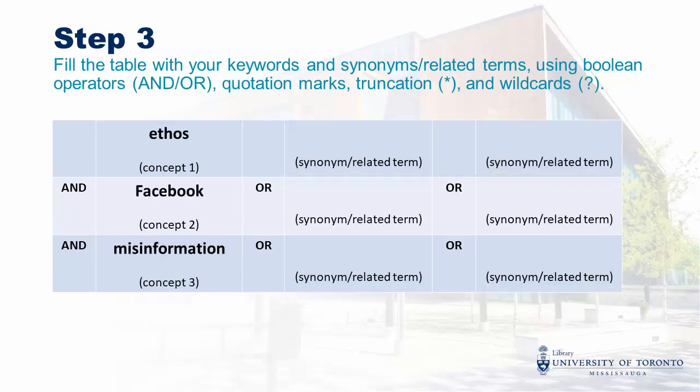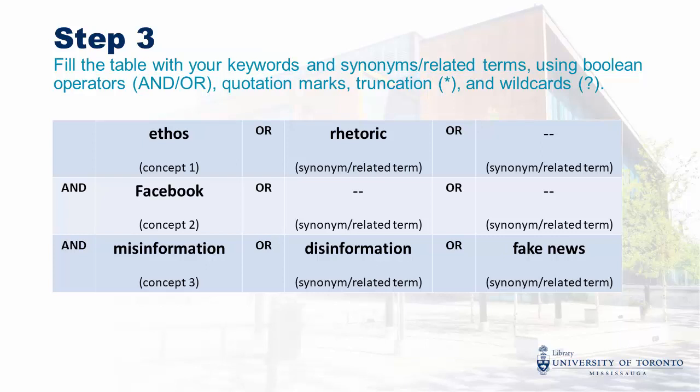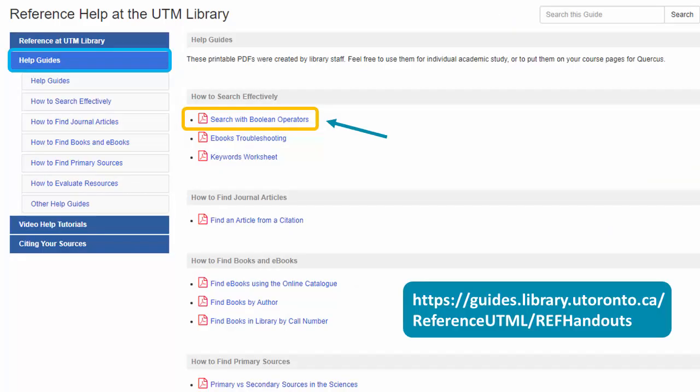To start, we'll put our first keyword, ethos, in the top row, and our other keywords on the other rows. Then we complete the table with the synonyms and related terms we brainstormed earlier. It's very important that we enter our synonyms and related terms in the same row as our keywords. We use AND to connect our concepts together — our search results must include the terms from each line. We use OR to give alternatives to our first term: if misinformation does not appear, fake news is okay. Check out the links in the description below for our searching with Boolean operators guide.